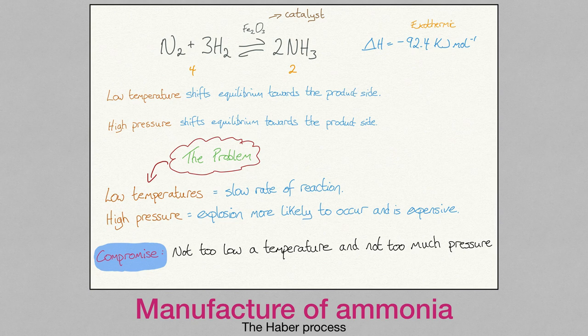Low temperature will favour the product side. However, we know from studying rates of reaction that low temperature means a slow rate. There is a high demand for ammonia, so a slow rate of production is not ideal. In addition, reactions under high pressure can be very unstable and dangerous, and it is also very expensive to maintain. Chemists must compromise and not have too low a temperature and not too high a pressure.